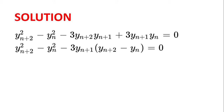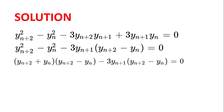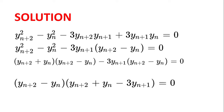Now we factorize the difference of two squares: yₙ₊₂ squared minus yₙ squared becomes yₙ₊₂ plus yₙ multiplied by yₙ₊₂ minus yₙ. So we have yₙ₊₂ plus yₙ multiplied by yₙ₊₂ minus yₙ, minus 3yₙ₊₁ multiplied by yₙ₊₂ minus yₙ equal to 0. Factorizing once more gives yₙ₊₂ minus yₙ multiplied by yₙ₊₂ plus yₙ minus 3yₙ₊₁ equal to 0.